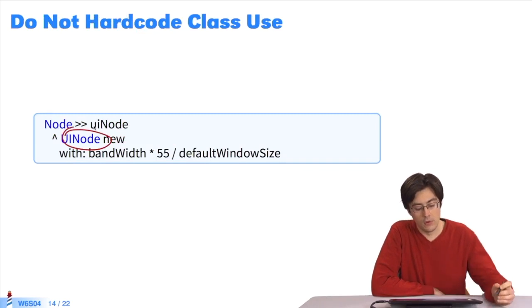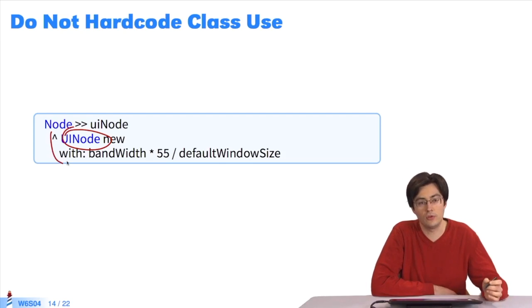In this case, the class we want an instance variable for is in hard code. This means that if the subclasses want to change this class, to potentially get a UINode subclass, it will have to duplicate the entire method.